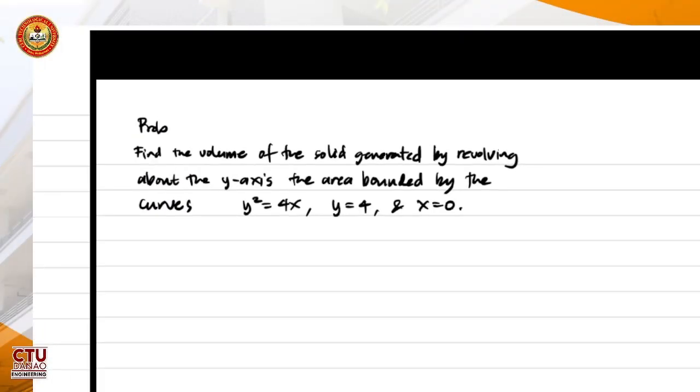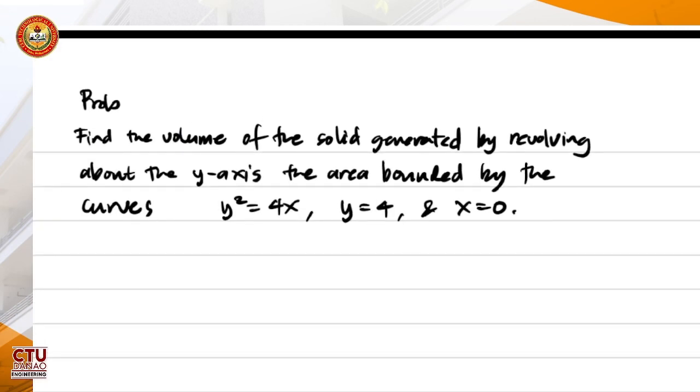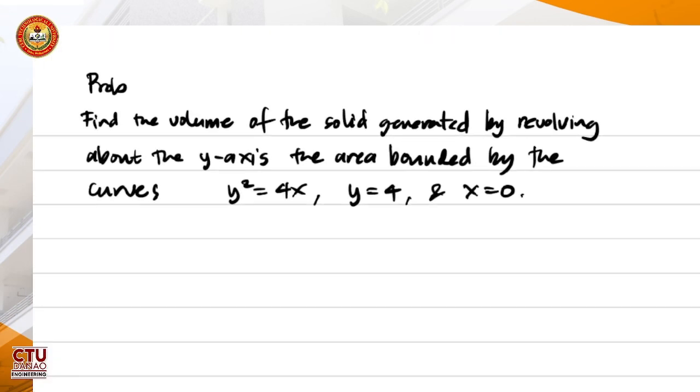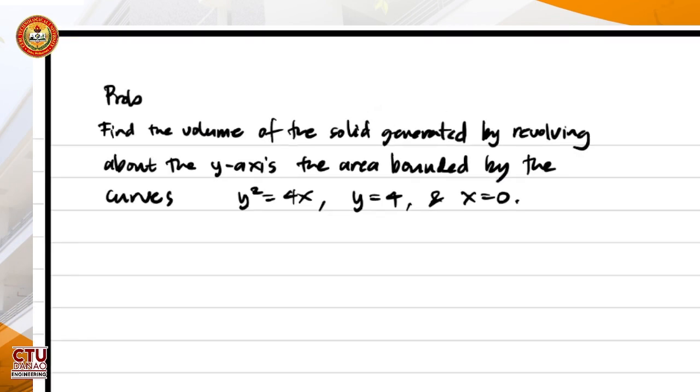Okay, so let's answer this problem. Find the volume of the solid generated by revolving about the y-axis, the area bounded by the curves y squared equal to 4x, y is equal to 4, and x is equal to 0.